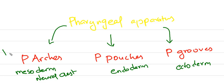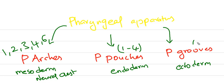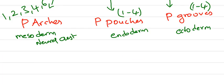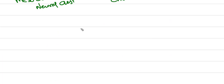Pharyngeal arches are 1, 2, 3, 4, and 6 in number. The fifth one appears transiently in our intrauterine life. Pharyngeal pouches and grooves are 1 to 4 in number.